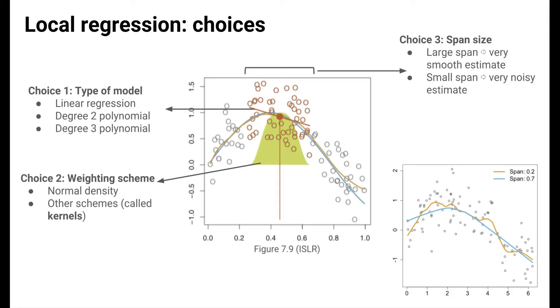In contrast, with a small span, only very close data points determine the estimate, so the estimated function is a bit noisier. This is illustrated with the orange line, where the span of 0.2 means that 20% of the data are used for each local fit.